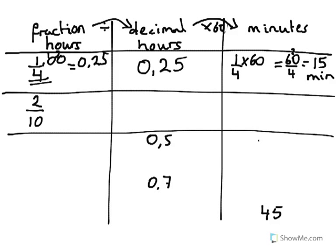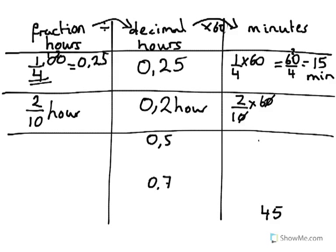For 2 tenths of an hour, to convert to decimals, anything divided by tenths is really easy — we just move the decimal point to give us 0.2 of an hour. If we would like to convert 2 tenths into minutes, keep it as the fraction form and multiply by 60. The zeros cancel, we get 2 times 6 equals 12 minutes. So 2 tenths of an hour is exactly the same as 12 minutes.